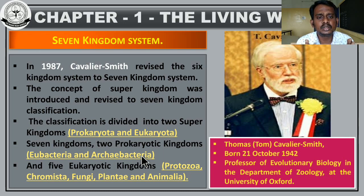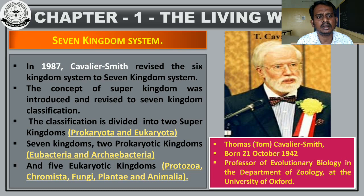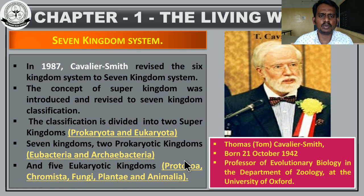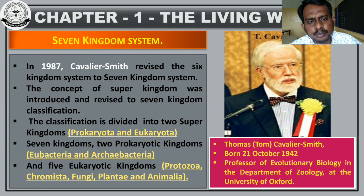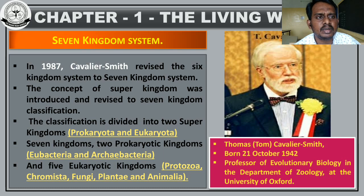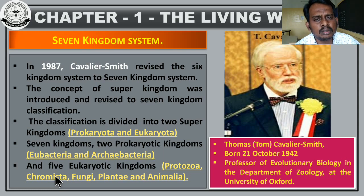All eukaryotic organisms are classified into five categories. The first is Protozoa — all unicellular organisms come under the protozoan category. The second is Chromista — a type of multicellular eukaryotic organism that are autotrophs. Some examples for Chromista are algae and diatoms. Chromista are eukaryotic, multicellular, and able to prepare their own food using photosynthetic pigments.